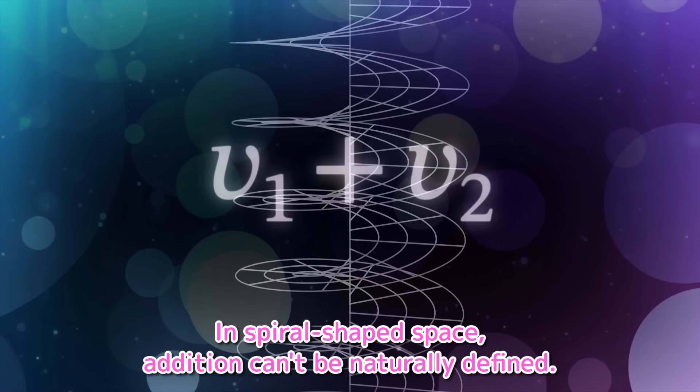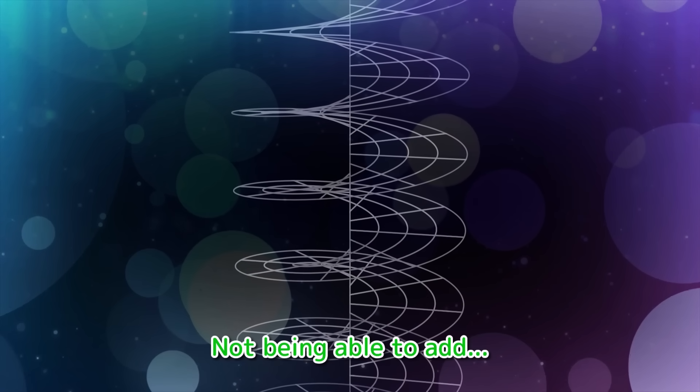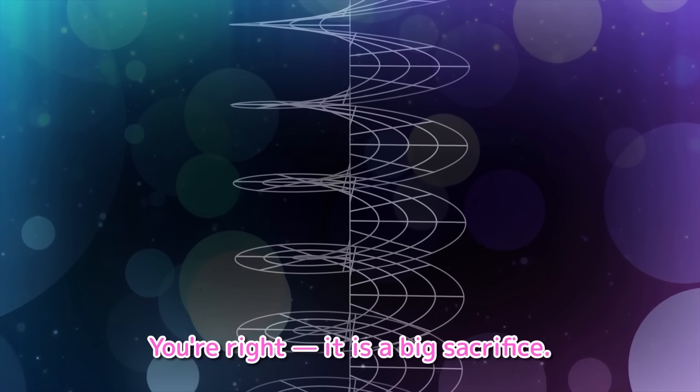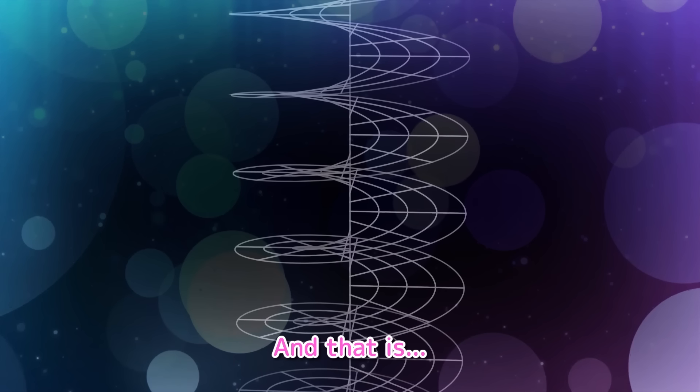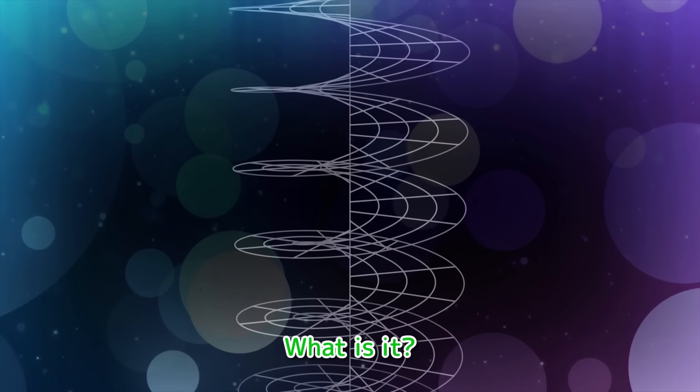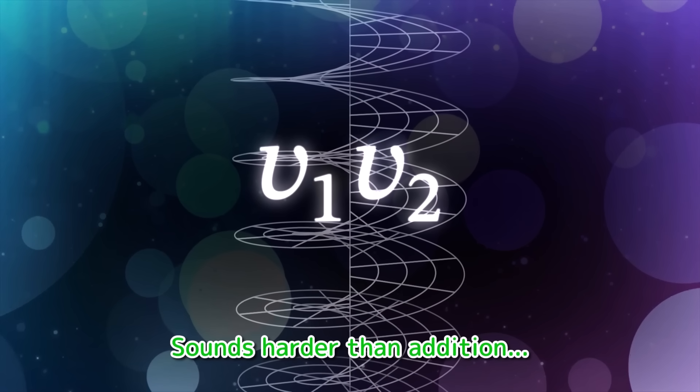You're right to feel that way. If we add 1∠0° to itself, then naturally the result should be 2∠0°. Hmm. Adding the same vector means its length becomes twice as long. But something very strange is happening here. Huh? What do you mean? Look more closely. In these two equations, this part is the only thing that differs. And what that means is, we're adding different vectors to the same vector, yet the result ends up being the same.